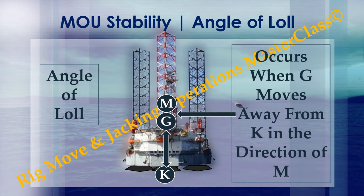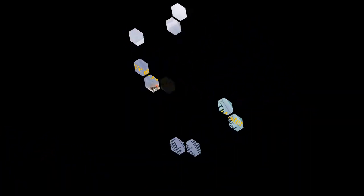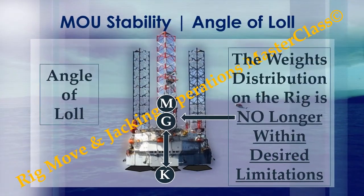Angle of loll. Angle of loll occurs when G moves away from K in the direction of M — too high. In this case the weight distribution on the rig is no longer within desired limitations.